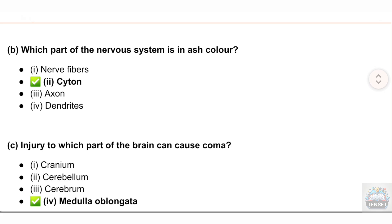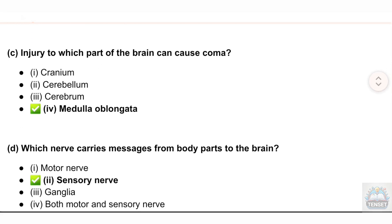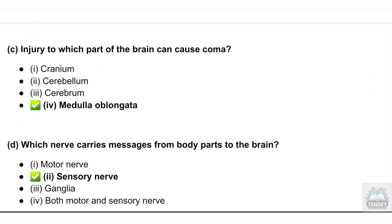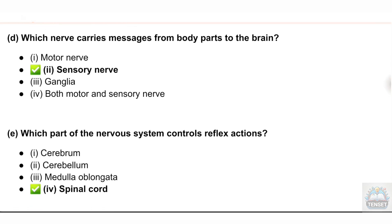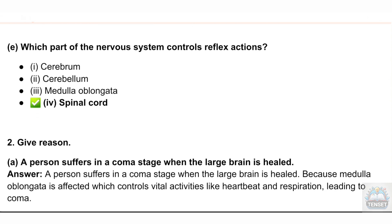(b) Which part of the nervous system is ash-colored? (i) Nerve fibers, (ii) Sydon, (iii) Axon, (iv) Dendrites. (c) Injury to which part of the brain can cause coma? (i) Cranium, (ii) Cerebellum, (iii) Cerebrum, (iv) Medulla oblongata. (d) Which nerve carries messages from body parts to the brain? (i) Motor nerve, (ii) Sensory nerve, (iii) Ganglia, (iv) Both motor and sensory nerve. (e) Which part of the nervous system controls reflex actions? (i) Cerebrum, (ii) Cerebellum, (iii) Medulla oblongata, (iv) Spinal cord.